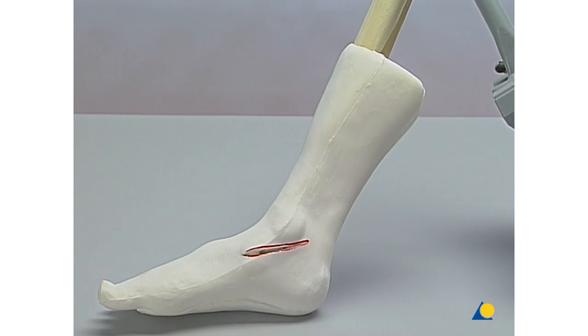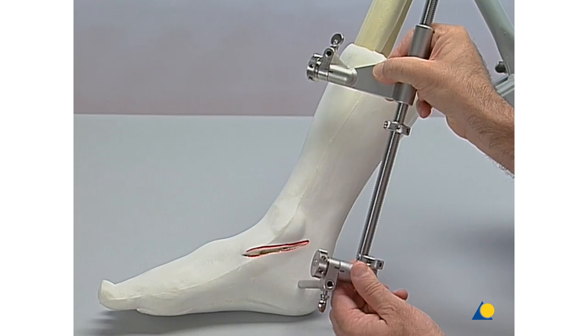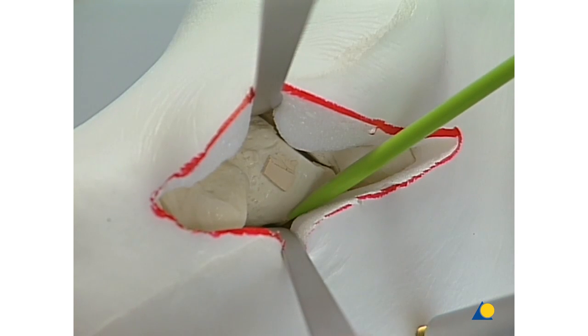A femoral distractor using the long sleeves is placed between the tibia and the calcaneus on the medial aspect of the leg. The aim is to demonstrate the anterior subtalar joint surface.